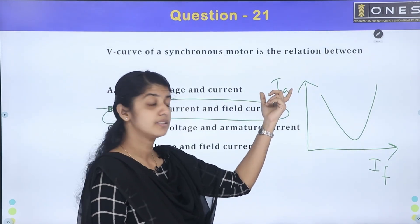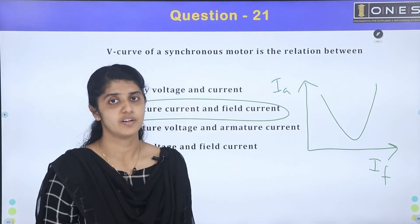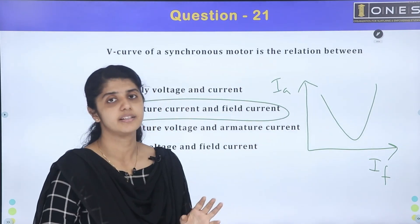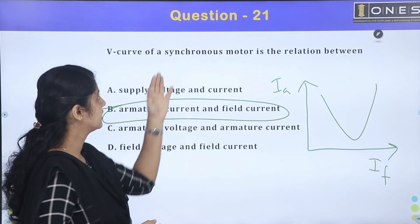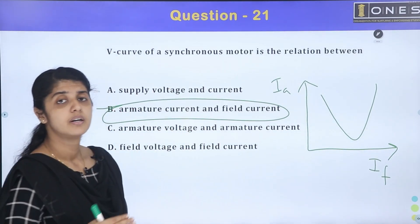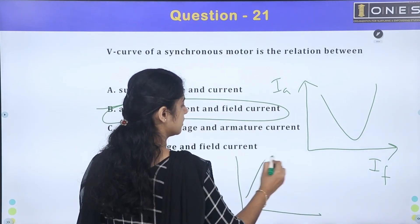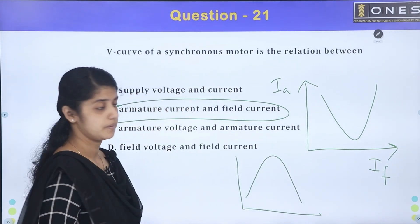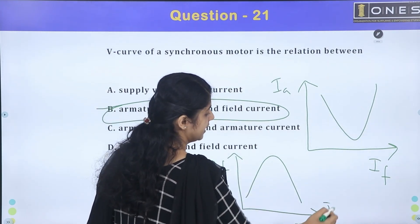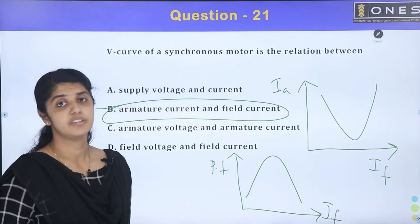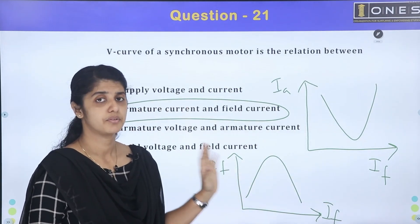If you have armature current (AC current) on one axis and field current (DC current) on the other, you get the V-curve. For power factor versus field current, the graph takes an inverted beaker shape, showing power factor variation.